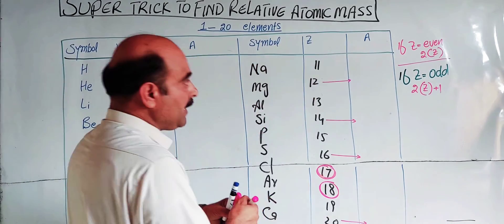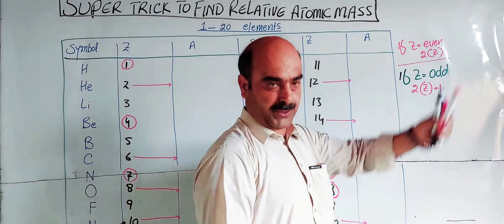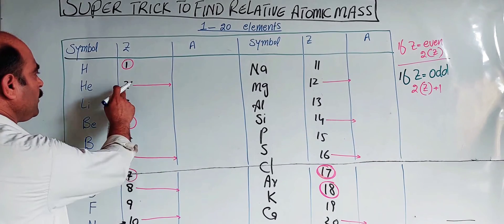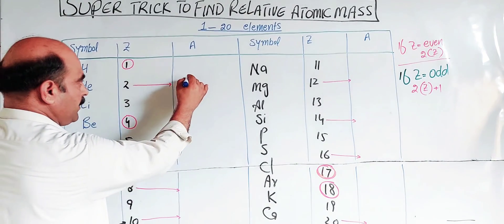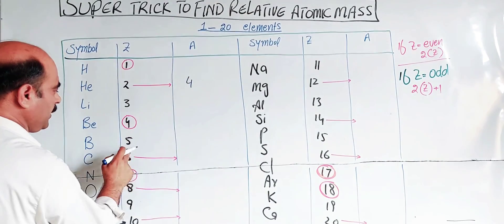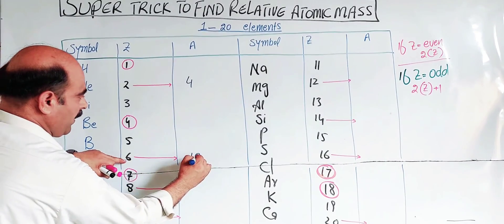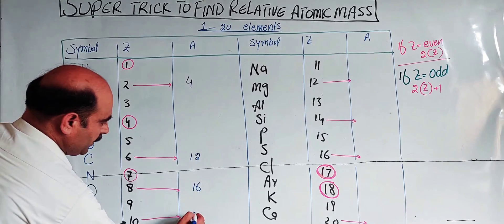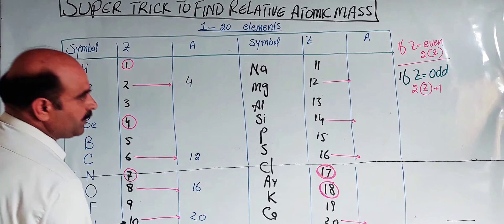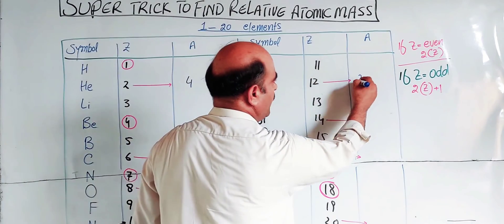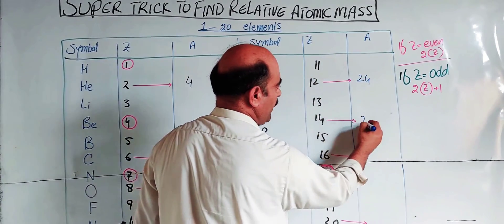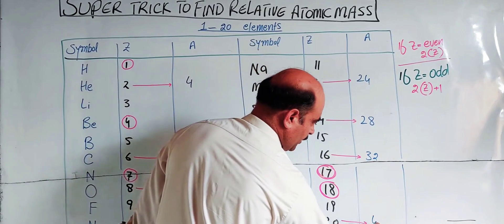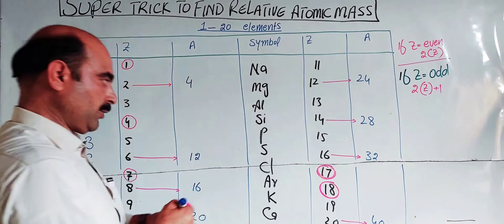Applying the even rule — 2 × Z — for even atomic numbers: Z=2 gives 4, Z=6 gives 12, Z=8 gives 16, Z=10 gives 20, Z=12 gives 24. So for even Z values, the mass number is simply double the atomic number.